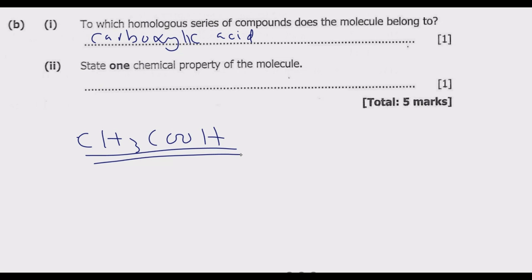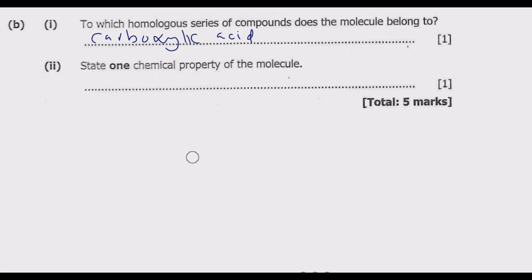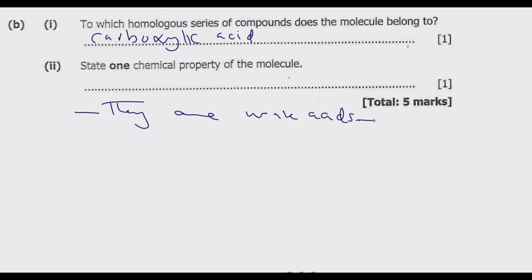Roman numeral 2: state one chemical property of the molecule. This molecule has a number of properties and you can choose just one. Property number 1: they are weak acids, meaning they partially ionize in water.